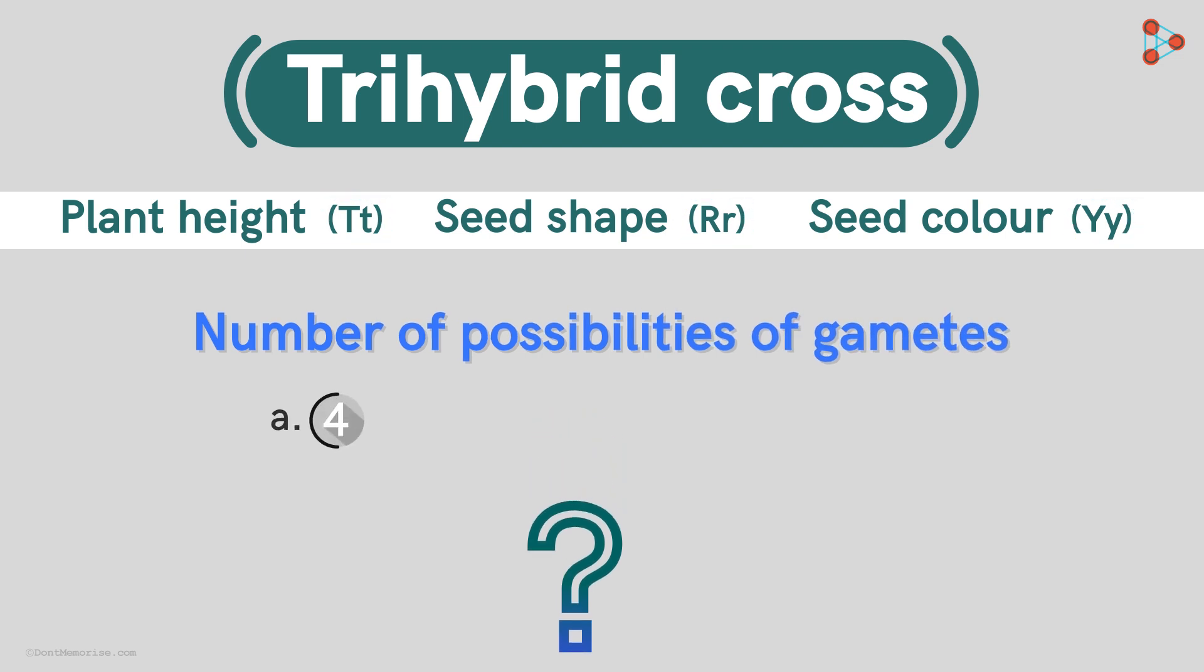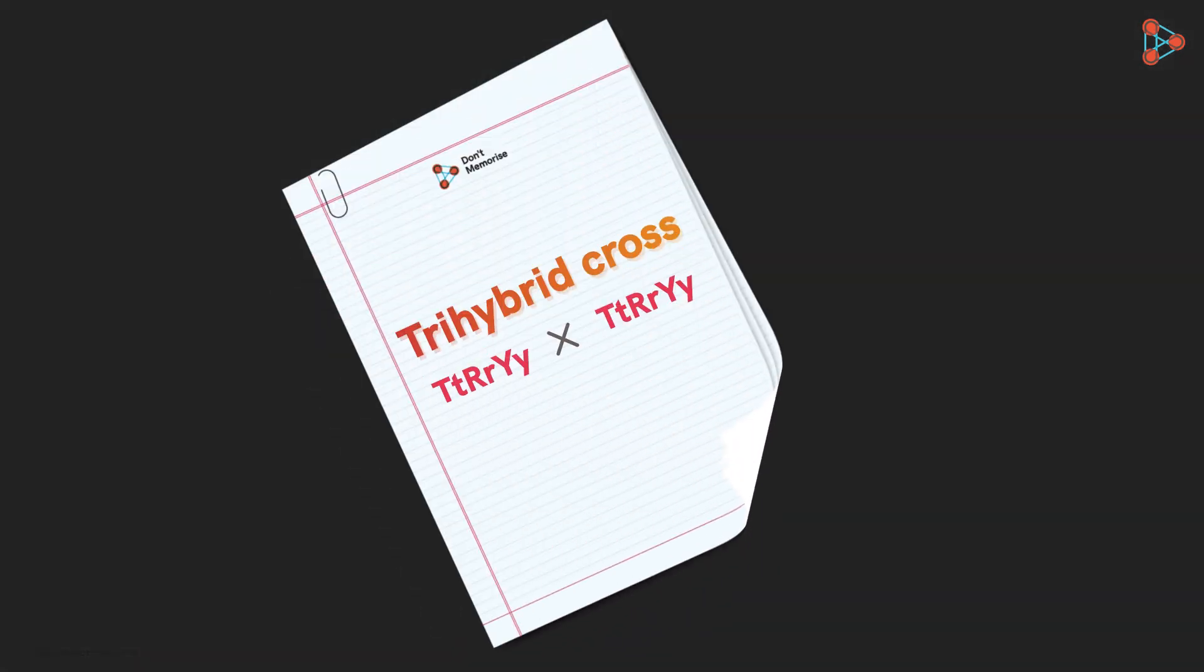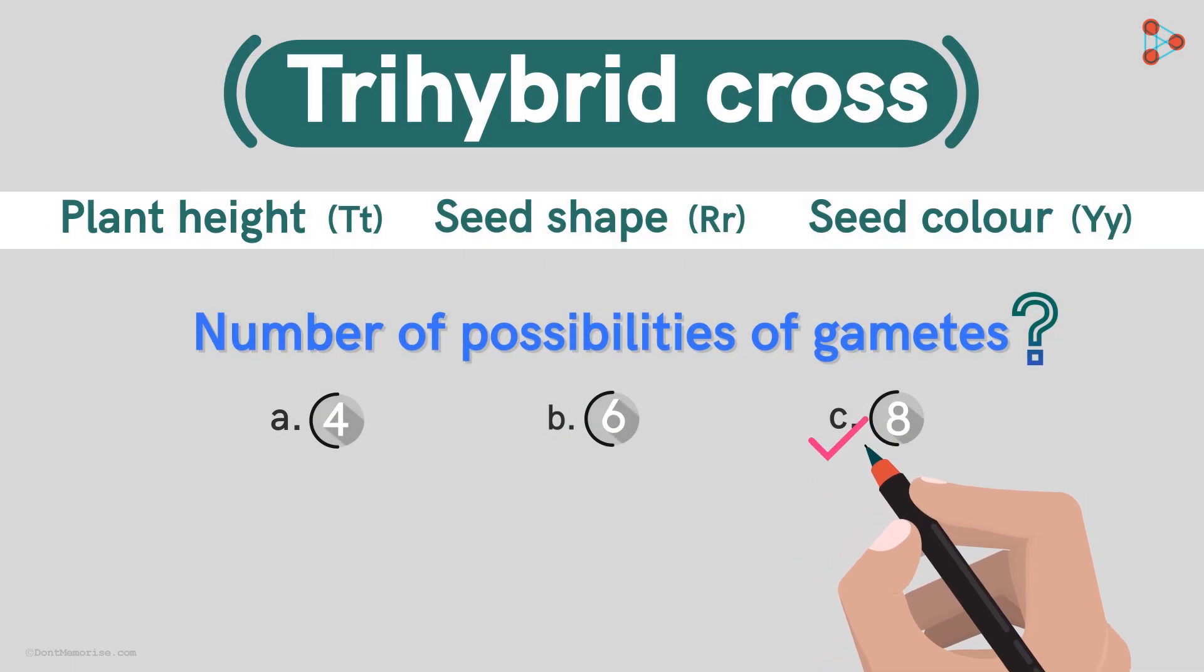Will there be 4 possibilities, or 6 or 8 combinations? You can pause the video and make the necessary calculations on a paper! We get 8 possibilities when a heterozygous individual for all the 3 traits is considered!